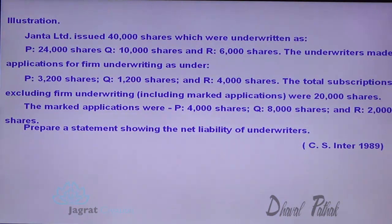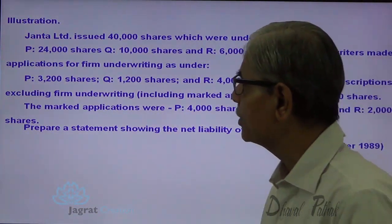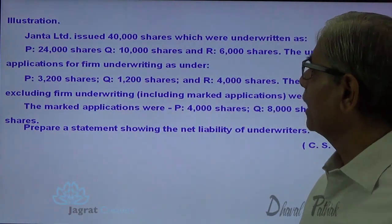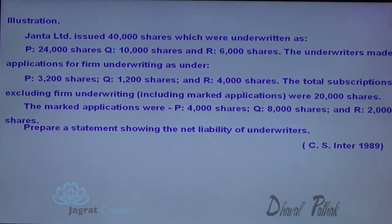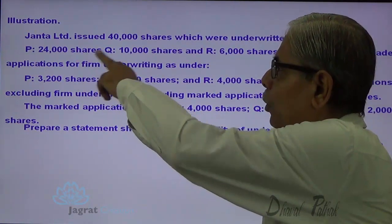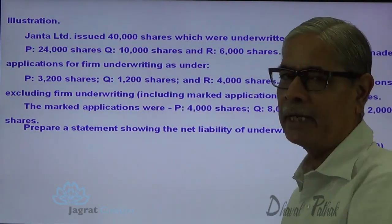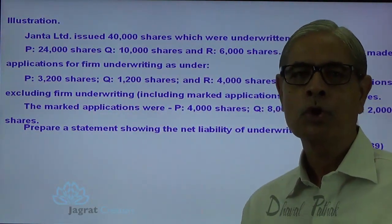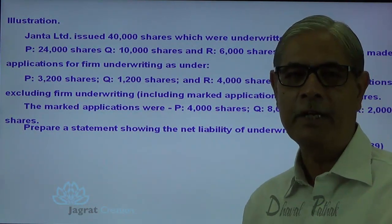Janata Limited issued 40,000 shares which were underwritten as: P is the underwriter who has taken the responsibility of 24,000 shares, Q has underwritten 10,000 shares, R has underwritten 6,000 shares. 24 plus 10 plus 6 works out to be 40,000. So this is not a case of partial underwriting.